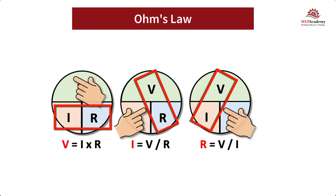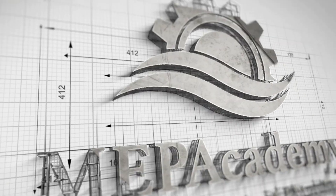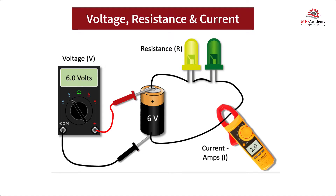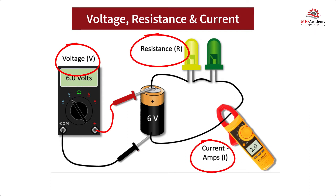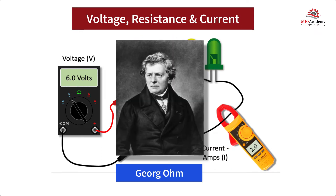Learn how Ohm's Law works and how to use it to solve problems. There is a relationship between voltage, current, and resistance that is easily explained using Ohm's Law. The German physicist George Ohm developed the theory that we are going to explain here.